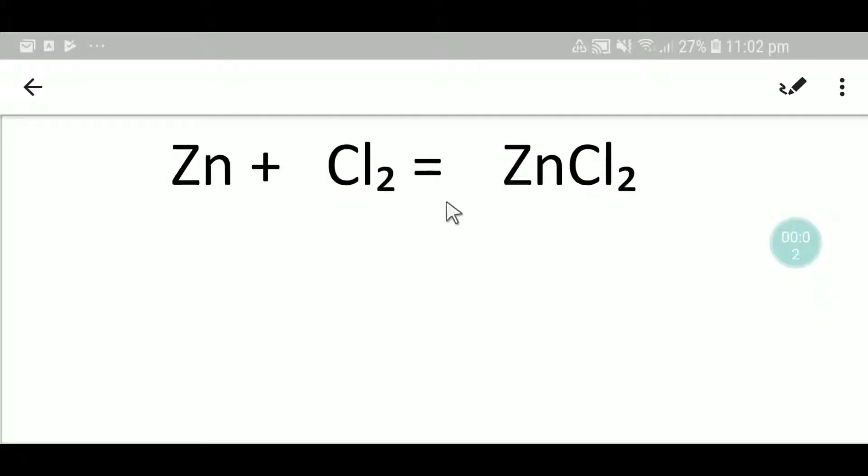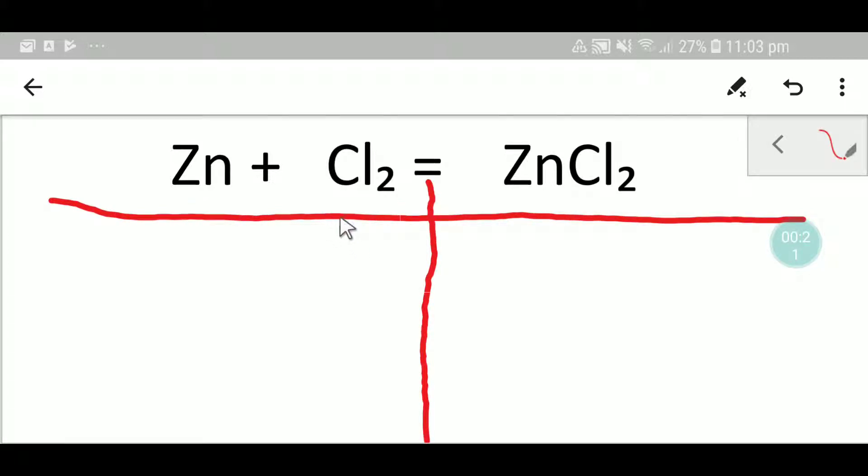Welcome to Chemistry Tutorial 360. Today we're going to balance this equation. This is zinc, this is chlorine, this is zinc chloride. To balance this reaction, let me draw a table like this.